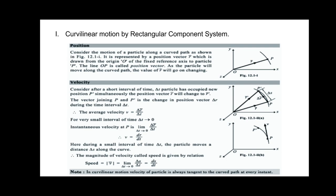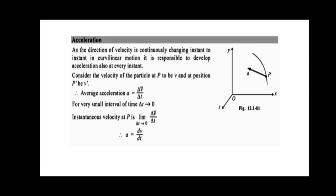In curvilinear motion, the velocity of the particle is always tangent to the path at every instant. As the direction of velocity is changing continuously, it is responsible for developing acceleration at every instant. Average acceleration A is given by delta V upon delta T, and the instantaneous acceleration is obtained by applying the limit as delta T tends to 0, giving acceleration as dV/dt.